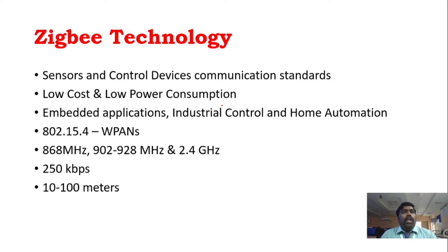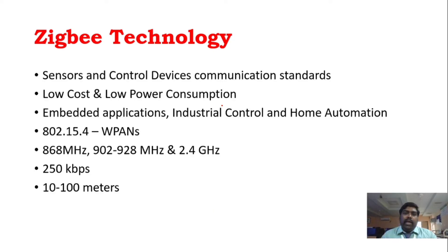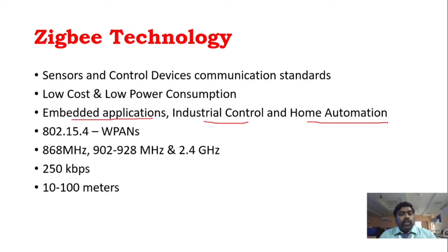We have a lot of higher standards with faster data transfer, but those are high power consumption standards. Zigbee technology is low cost and low power consumption. It is a simpler wireless standard used for embedded applications, industrial automation, and home automation.